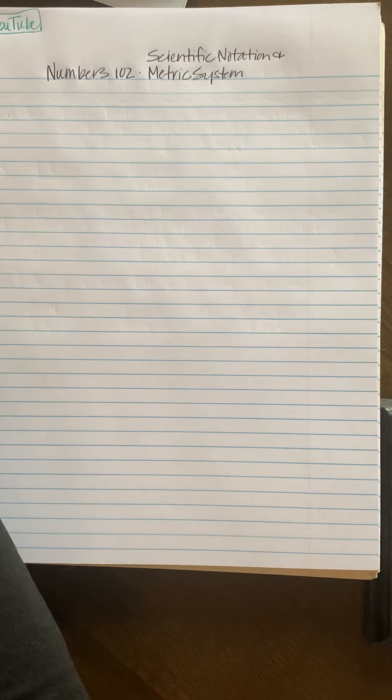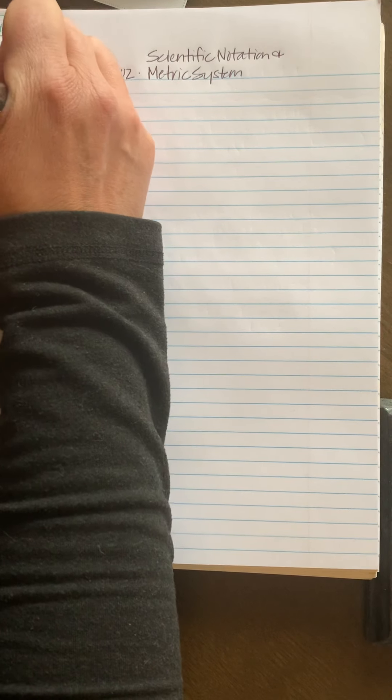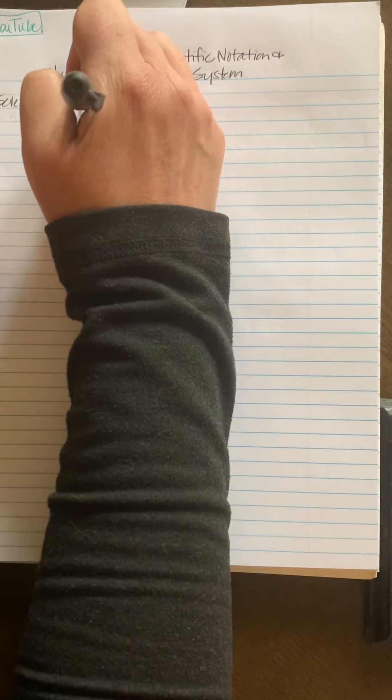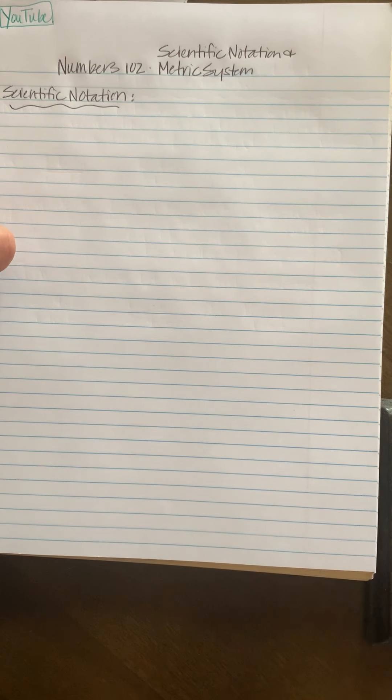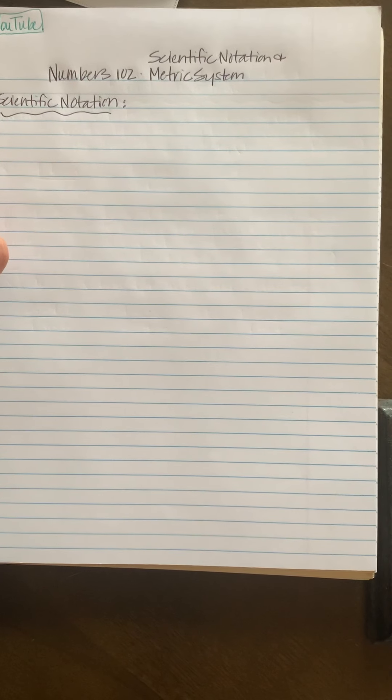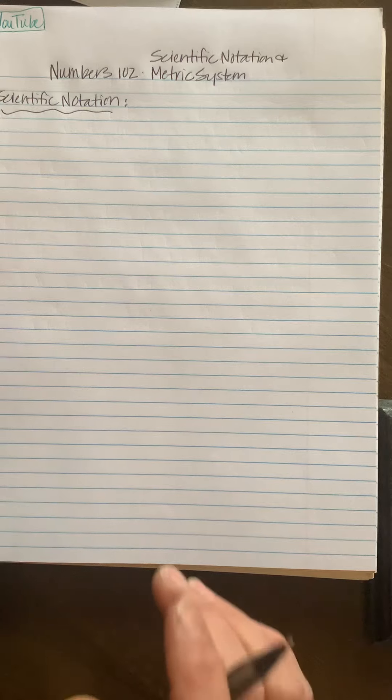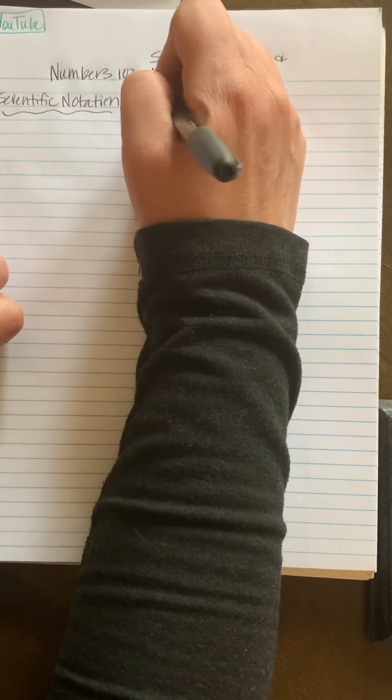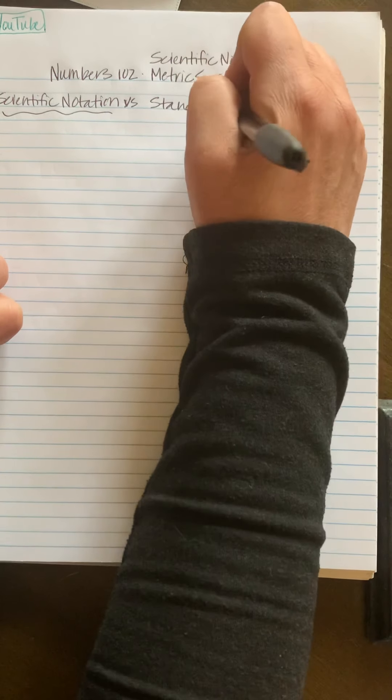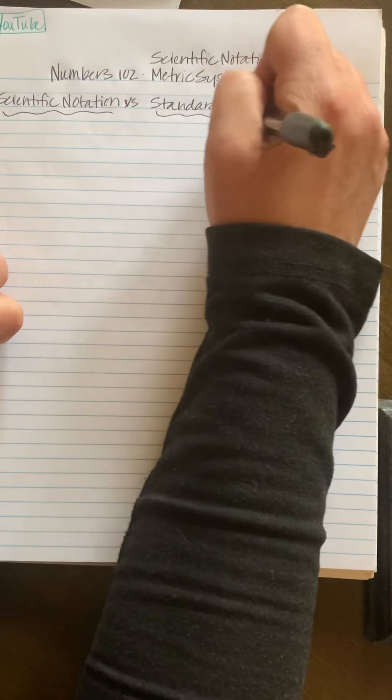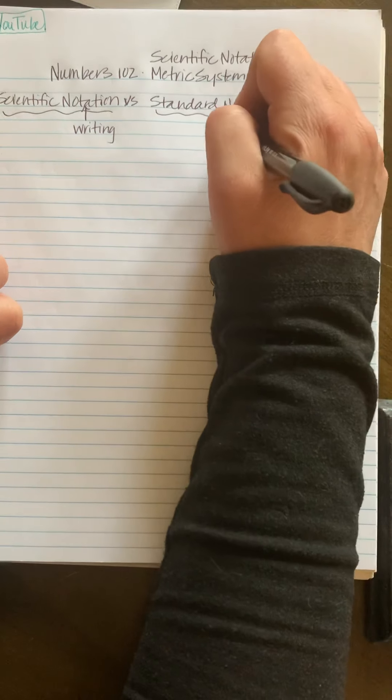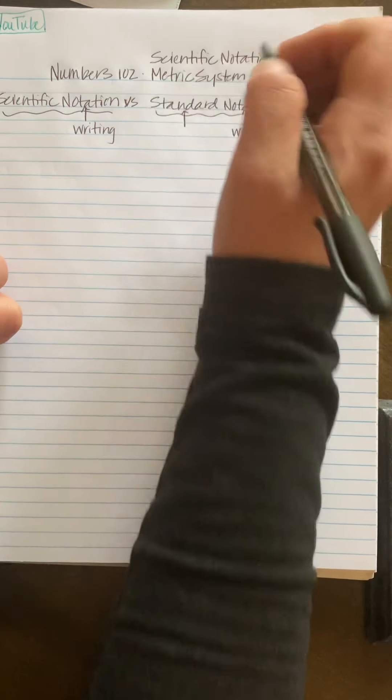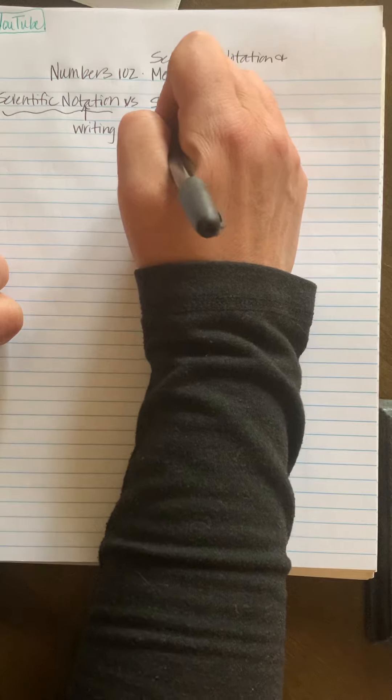Okay, so we're gonna start with scientific notation. Scientific notation is just a way to write numbers, and we're gonna say versus standard notation.